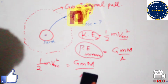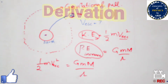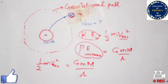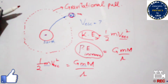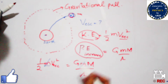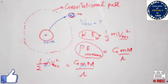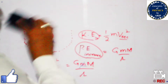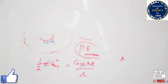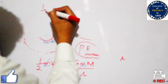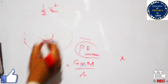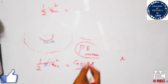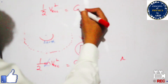You can see that mass m appears on both sides of the equation. We can cancel mass from both sides using basic mathematics. The expression becomes: one half v² = GM/r, where v is the escape velocity.